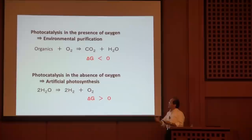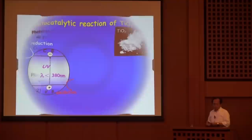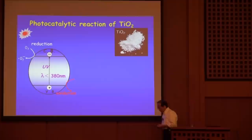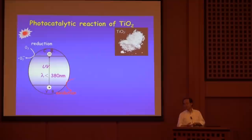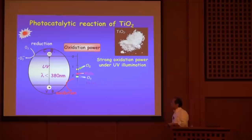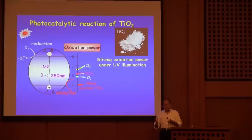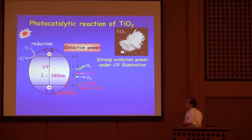So first, I'm going to talk on the first topic: reactions in the presence of oxygen, which give negative free energy change. The most famous photocatalytic reaction in the presence of oxygen, which I have studied for a long time, is the reaction using titanium dioxide. Titanium dioxide is a white pigment, and that's why it absorbs only UV light. The characteristic of titanium dioxide is its deep valence band — the photogenerated hole has a strong oxidation power. That's why it can oxidize various organic compounds finally into CO₂. The oxidation power of the photogenerated hole is so strong, much stronger than even ozone.